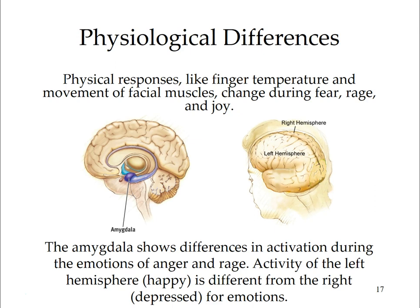Emotions activate different areas of the brain's cortex. The right prefrontal cortex becomes more electrically active as people experience negative emotions such as disgust, while the left frontal lobe shows more activity with positive emotions.